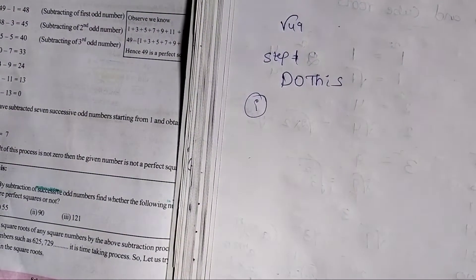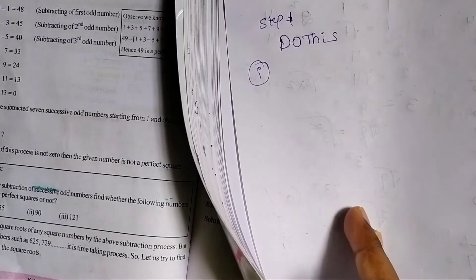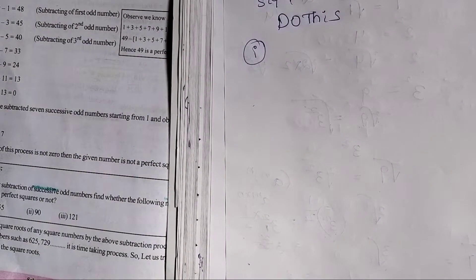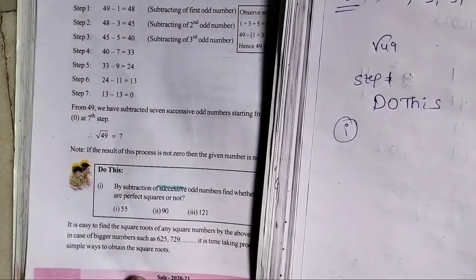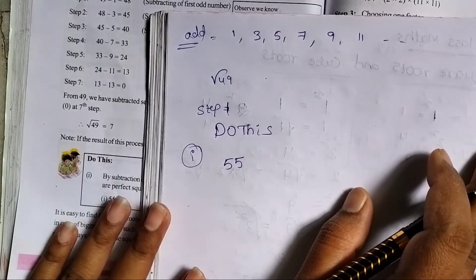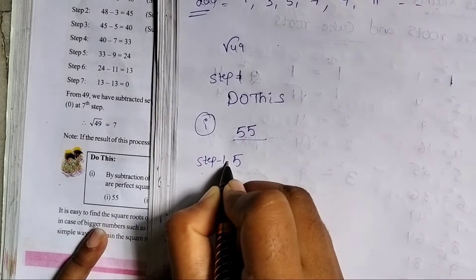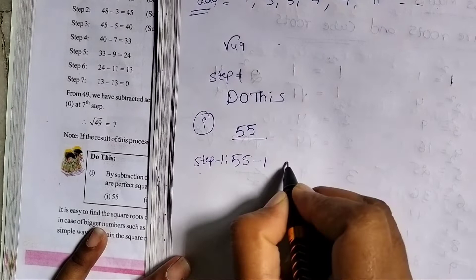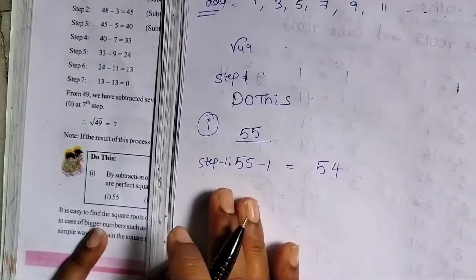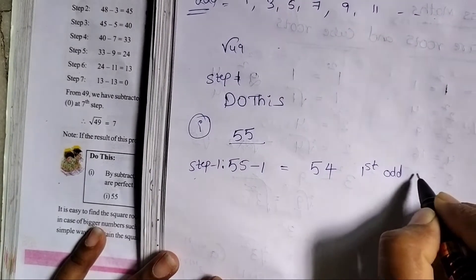Find whether the following numbers are perfect squares or not. First question: 55. We have to check using successive odd numbers. Step 1: start with 55 and subtract the first odd number.